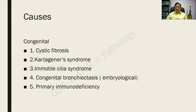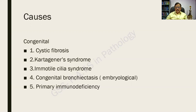The causes are divided into congenital and acquired. The congenital causes include: cystic fibrosis — an important condition both clinically and pathologically; Kartagener's syndrome, of prime importance; immotile cilia syndrome, which can be an MCQ; bronchial injury; congenital bronchiectasis as an embryological defect; and primary immunodeficiency, where a patient is repeatedly prone to infection leading to bronchiectasis.